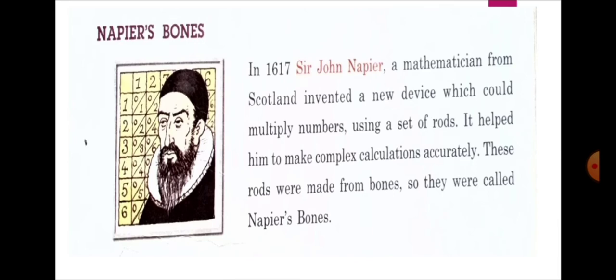In 1617, Sir John Napier, a mathematician from Scotland, invented a new device which could multiply numbers using a set of rods. It helped him to make complex calculations accurately. These rods were made from bones, so they were called Napier bones.